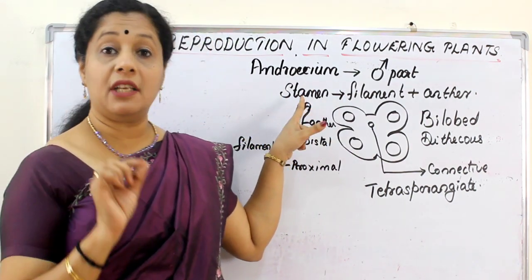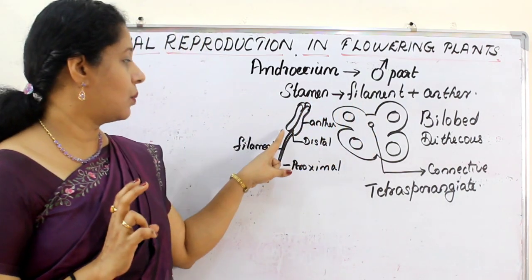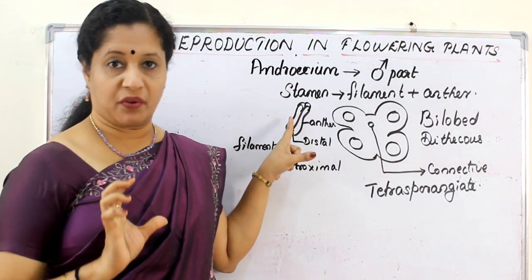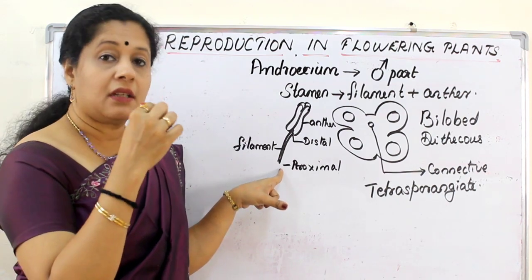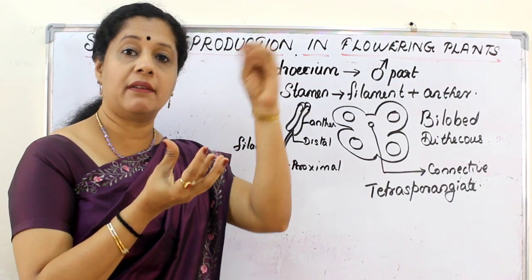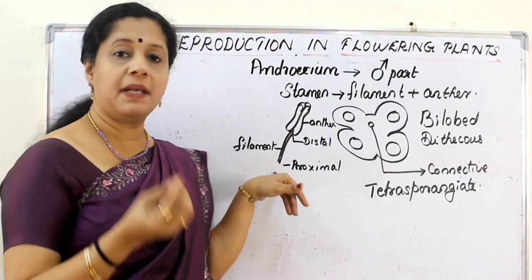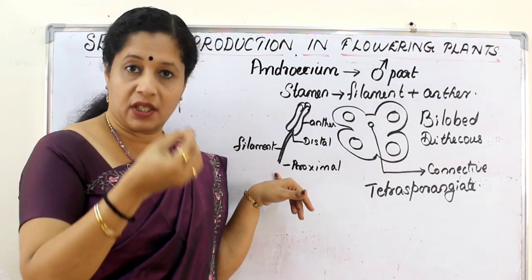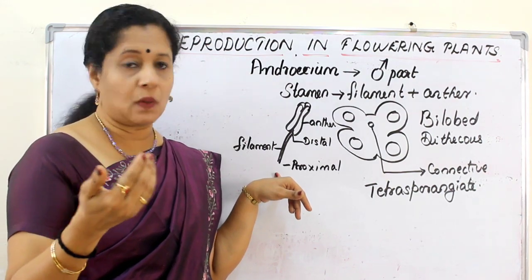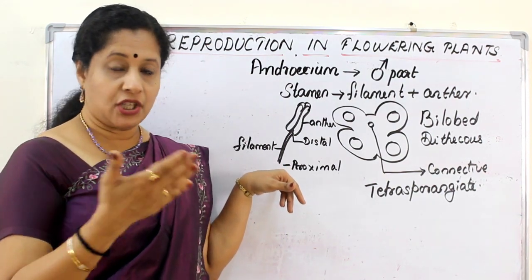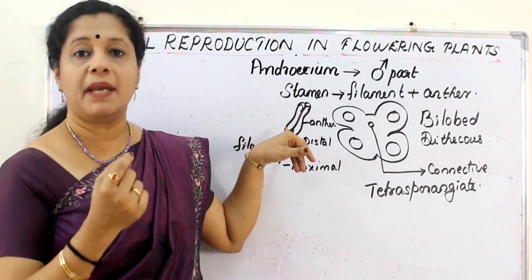The androecium is made up of individual units called stamens. Each stamen has two parts: one filament and one anther on top of it. The proximal part of the filament is attached to the thalamus — the part from which all the floral parts arise. The proximal part is connected to the thalamus, or in some cases it is attached to the petals, which is the epipetalous condition. The distal end is connected to the base of the anther.